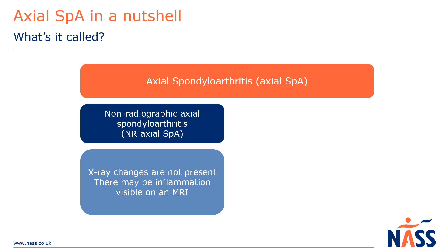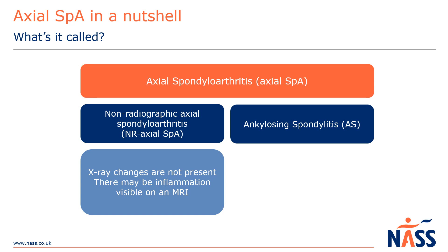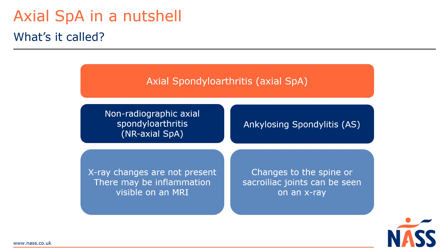This means they have the symptoms of axial SpA, but when they have imaging done, there are no bony changes shown on an x-ray, and they may or may not have inflammation shown on the MRI scan. Ankylosing spondylitis, known as AS for short, is the name we use when someone has bone changes visible on an x-ray, and not all people with non-radiographic axial SpA will progress to AS.